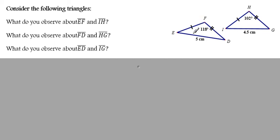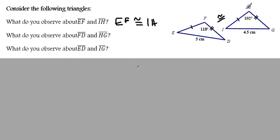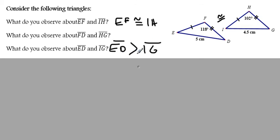Given these two triangles, what do you observe about EF and IH? Well, EF in triangle EFD is congruent to IH in triangle IHG. And then FD and HG — they put two congruency marks to show that FD is congruent to HG. And then ED and IG: ED has a measure of 5 centimeters and IG has a measure of 4.5 centimeters. So ED is greater than IG.